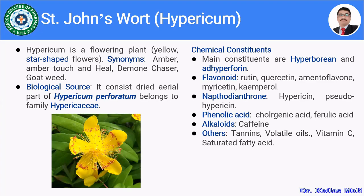Moving towards the chemical constituents present in Hypericum, St. John's Wort comprises mainly hyperforin and adhyperforin. Apart from these, there are many other chemical constituents present, like flavonoids, naphthodianthrones, phenolic acids, alkaloids, and some other constituents. Let us see each one of the chemical constituents present in Hypericum.